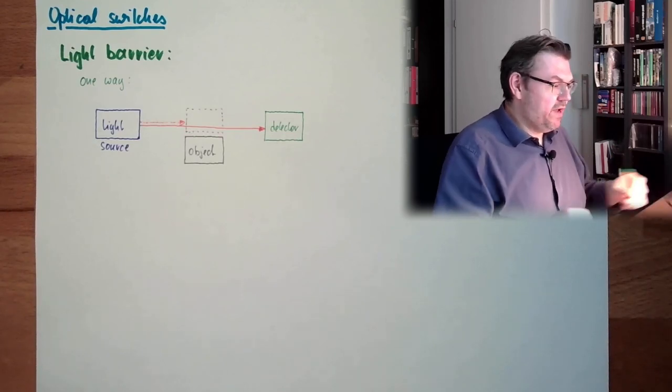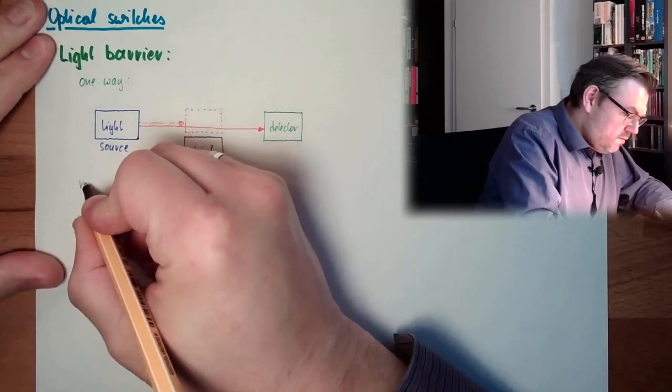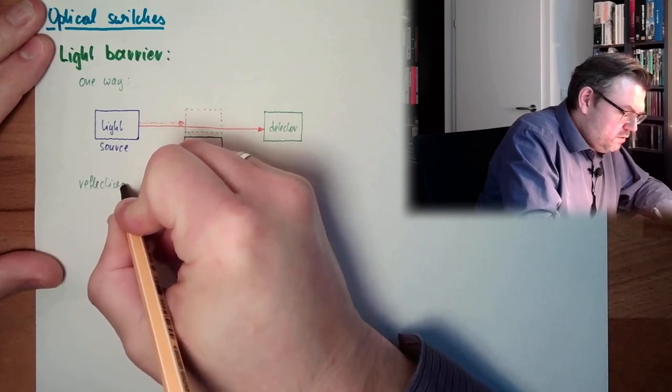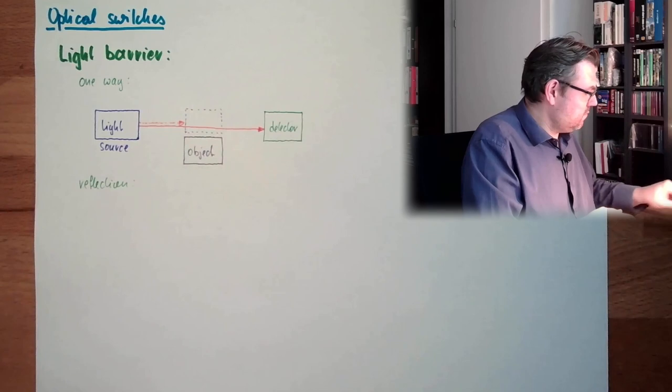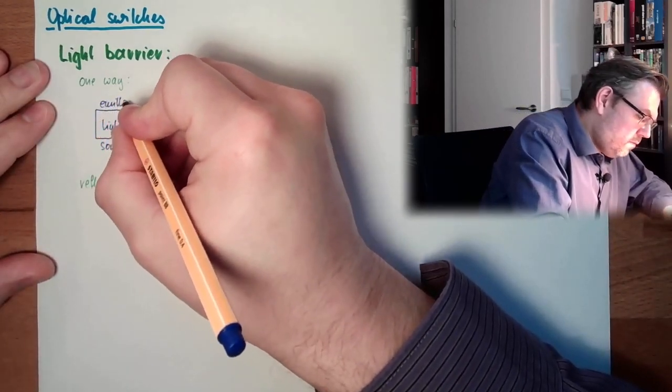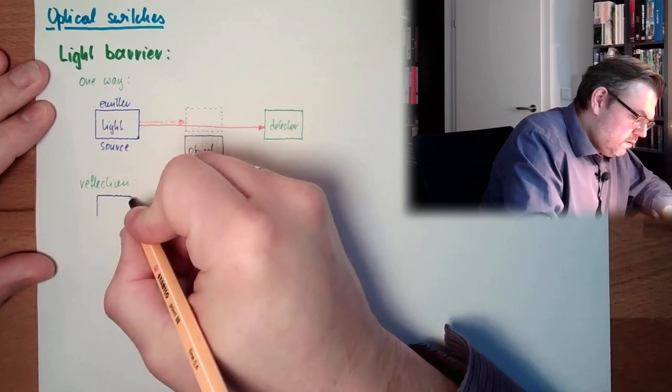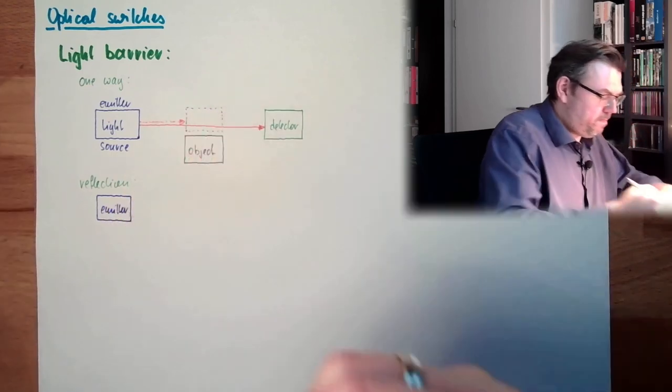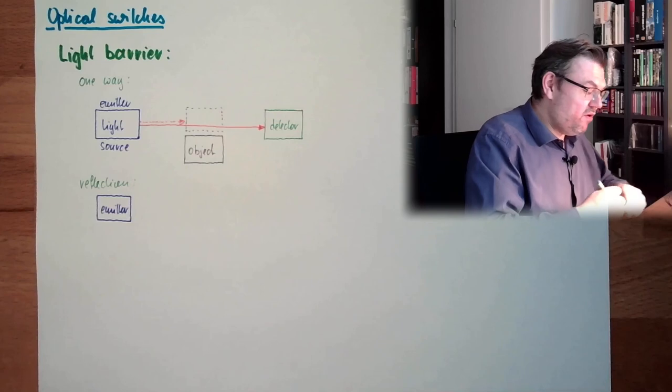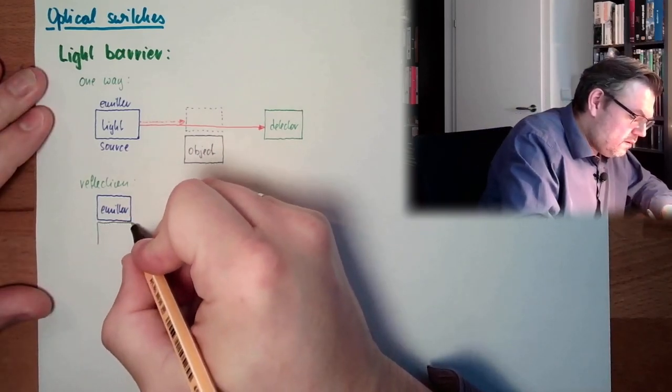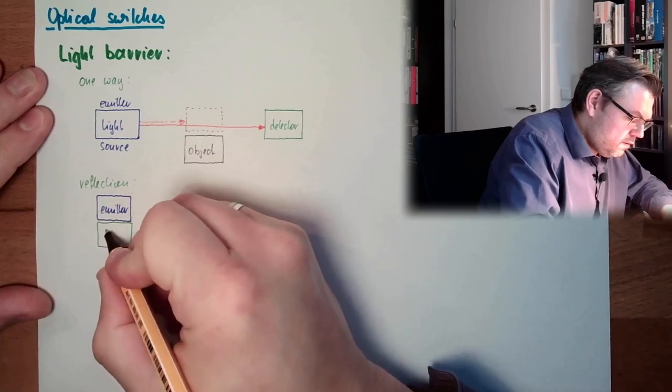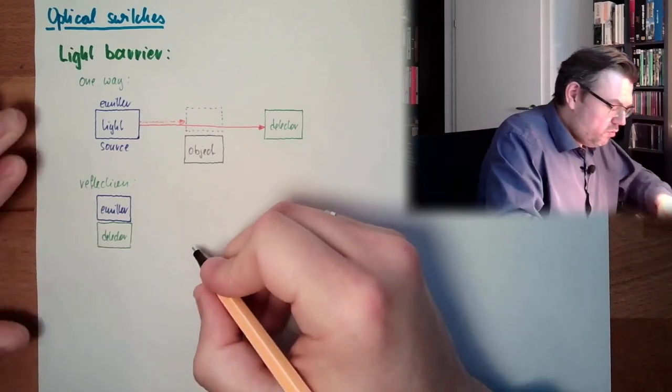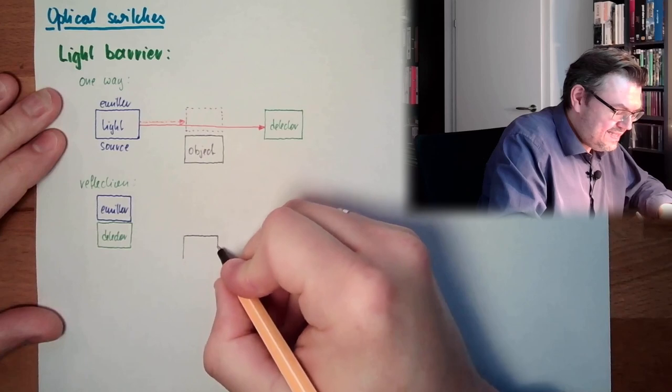There is also a reflection type. We have again an emitter. We have again a detector. However, they are now at the same side. We have again an object we want to see or not see.